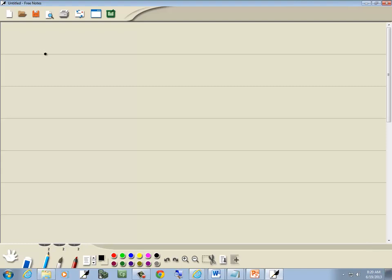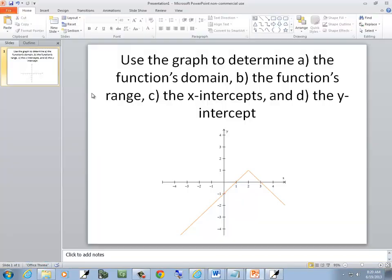So for part A, domain. Domain is the x-values where the graph exists. Well, as this goes down, see how this is going to the left? So as it keeps going down forever, it will keep going to the left forever, which implies it's going to negative infinity.